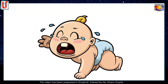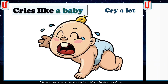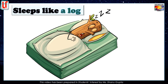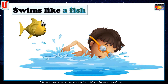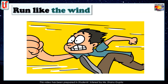Now we have some similes using the word 'like' for comparisons. If we say someone cries like a baby, it means he or she cries a lot. If we say someone sleeps like a log — a log of wood — it means he or she sleeps very soundly. You are completely immobile, just like a log, when you are in sound sleep. If someone swims like a fish, it means that the person is a very strong swimmer. And finally, if someone runs like the wind, it means he or she runs very fast.